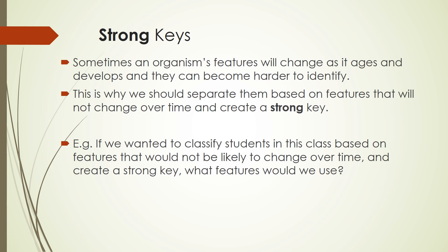One last thing about dichotomous keys: to be effective they need to be what we call a strong key. Sometimes an organism's features will change as it ages, making them harder to identify. This is why we should separate organisms based on features that will not change over time. For example, if I wanted to classify all of you based on stable features, I cannot use hair colour or length because it can change even next week. I also can't use your height or weight because they'll change over time.